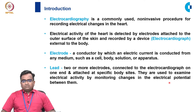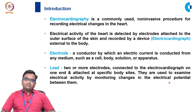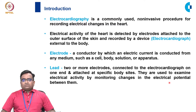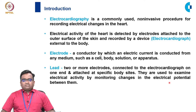A lead is two or more electrodes — one end connected to the body surface and the other end connected to the ECG machine. If there are two leads, the potential difference between those two leads is picked up from the body surface and conducted to the ECG machine.